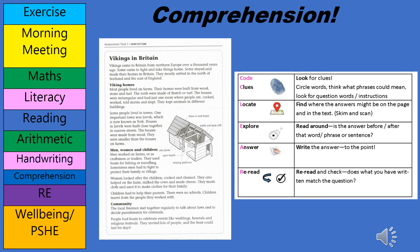For question five, you have got a matching activity. Please, if you can, use a ruler or something with a straight edge to make sure that your lines are nice and neat, so that when you upload this on Class Dojo I can see exactly what you mean to show me.